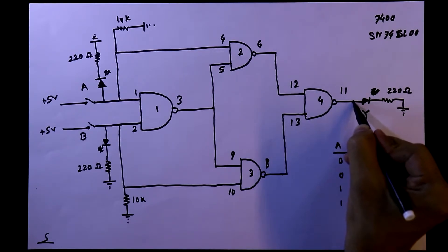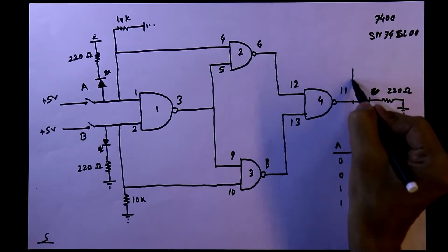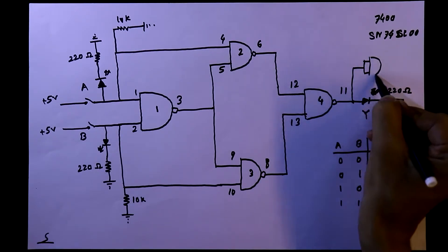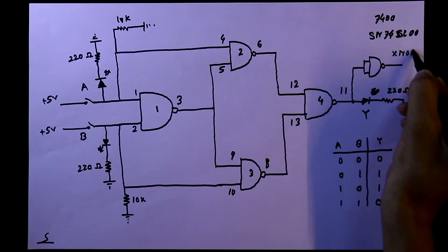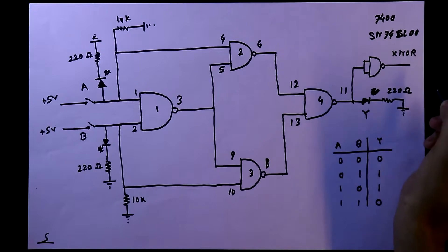As we know this output is XOR gate, so we have to add one NOT gate using NAND gate and its output will be XNOR. So this is how we can get XNOR output using NAND gate.